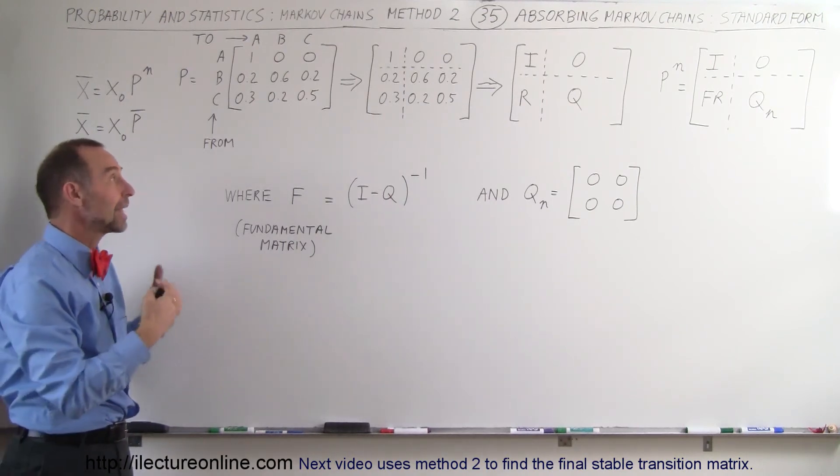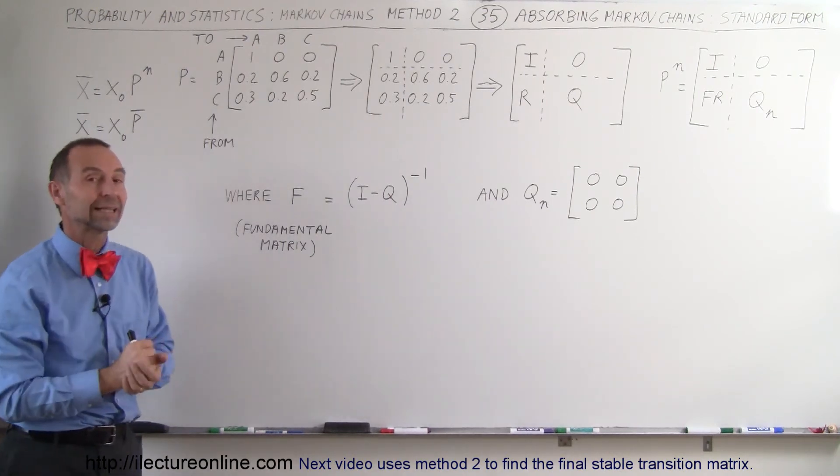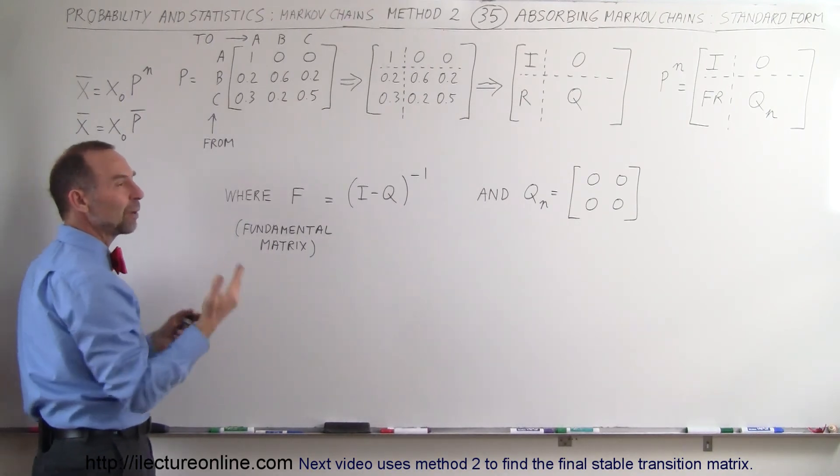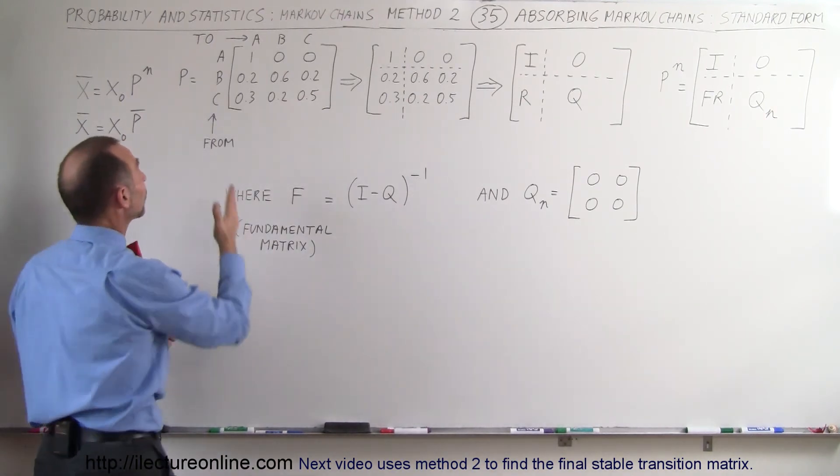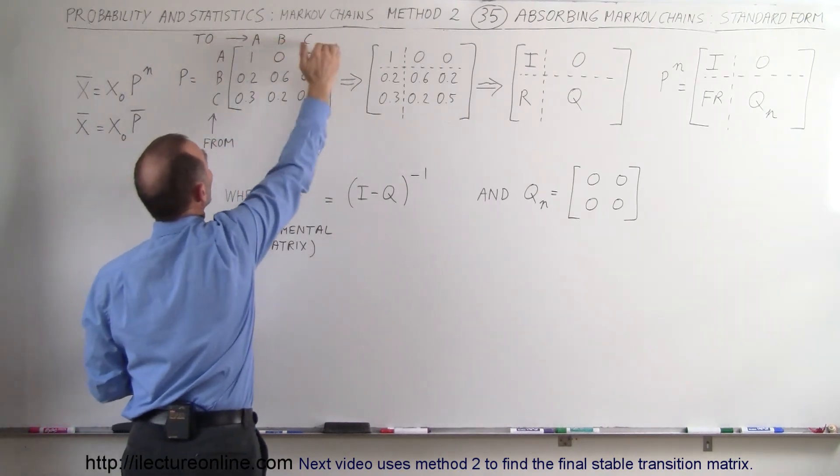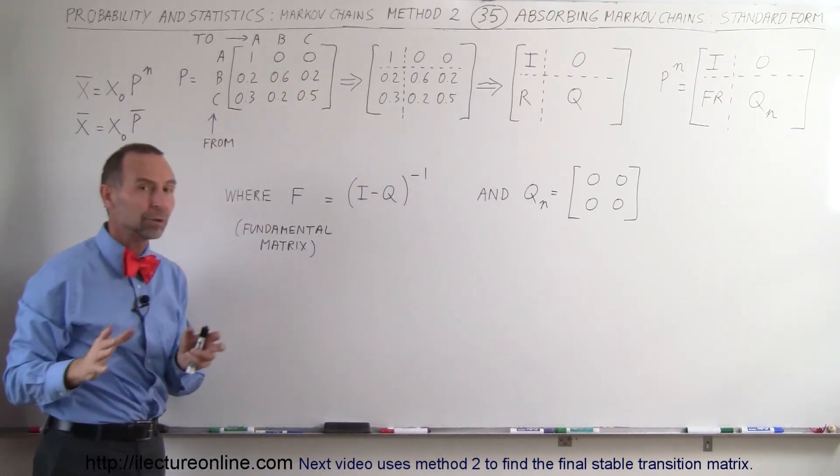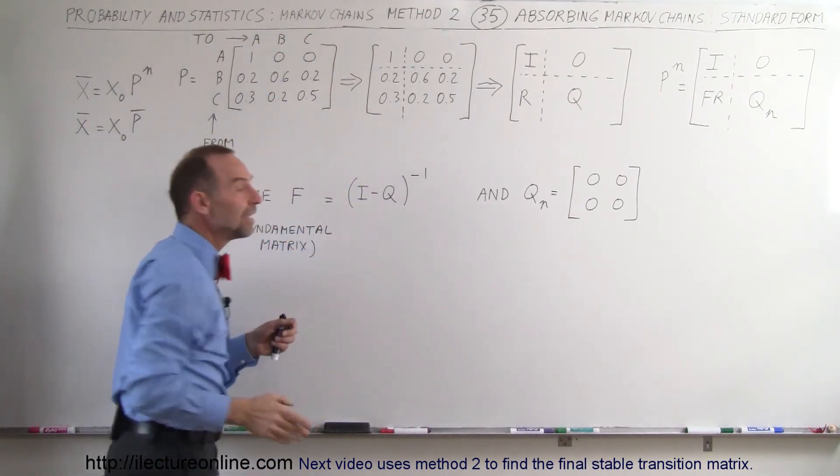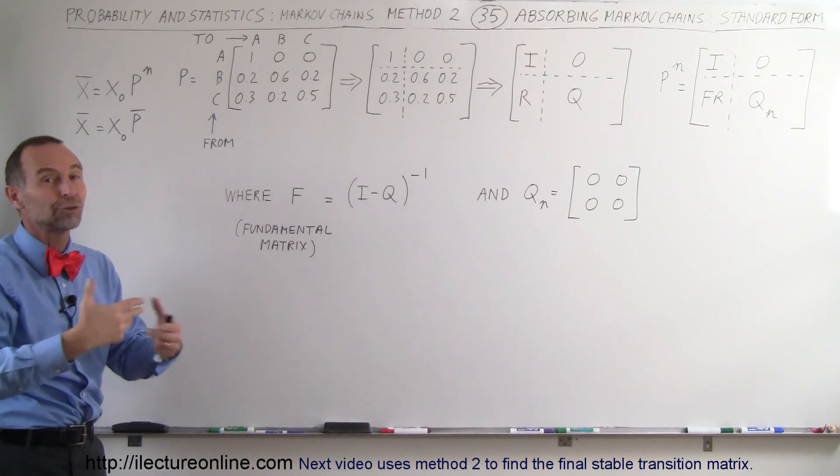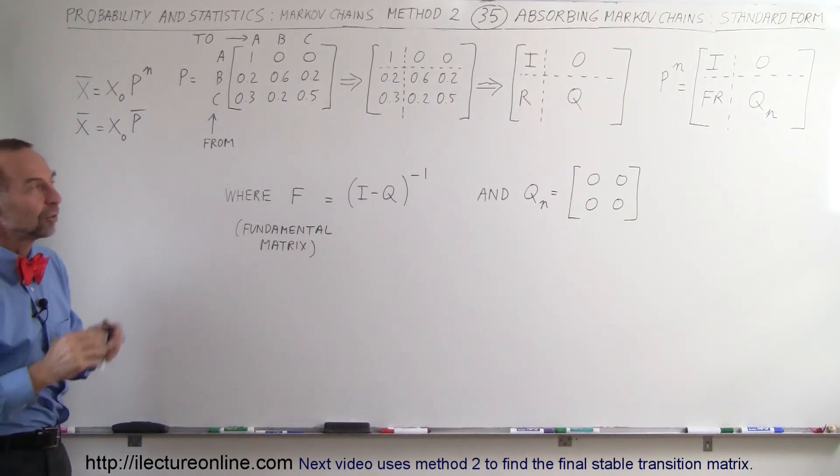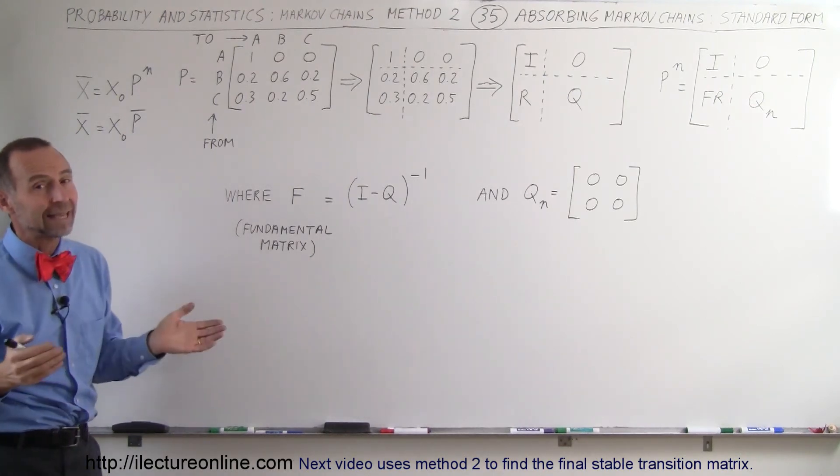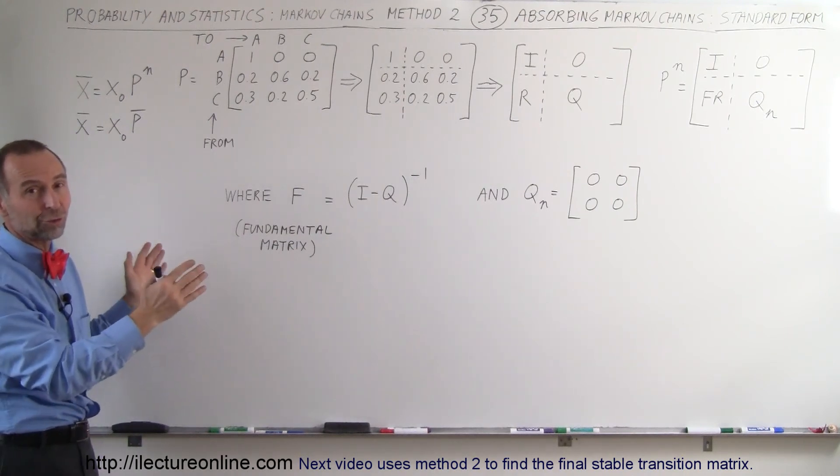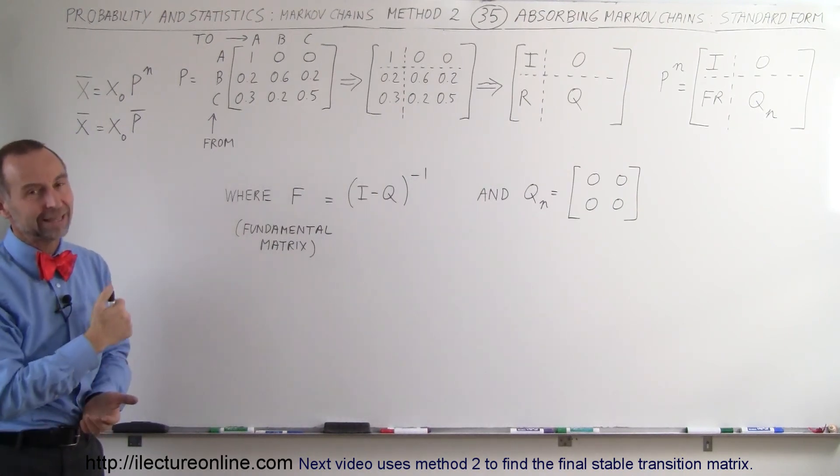In the next video, I'll show you how to actually calculate something like this using this particular format. Remember, this format is different from what I showed you in earlier videos because we have the from states on the left side and the to states on the top. If your book has the from states at the top and the to states on the right side, you have to go look at these other videos where I showed you how to do it like that as well. This is a different technique, and there are different techniques in different textbooks. That's how it's done.